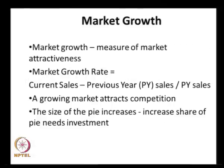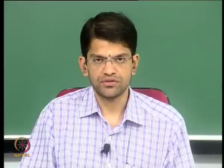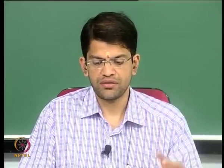Market growth measures the attractiveness of a market. The market growth rate is this year's sales minus the previous year's sales, divided by previous year's sales. If it is greater than one, it is a growing market. A growing market always attracts competition because the size of the pie keeps increasing, and to gain incremental shares you need additional investment. So a growing market attracts competition and also needs investment to gain more market share. These two parameters — market growth and relative market share — are used in the BCG matrix.